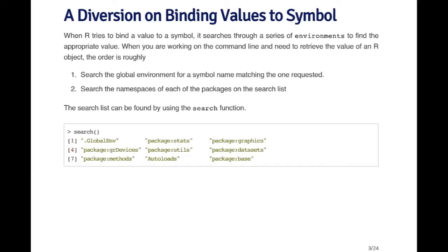If there's no match in the global environment, R will search the namespaces of each of the packages on the search list. The search list consists of all R packages currently loaded. There's an order: the global environment is always number one, then second is the stats package, graphics, GR devices, and all the way at the very end is the base package. So somewhere in this list R is going to look for lm, and if it's not in the global environment, it will eventually find it in the stats package.